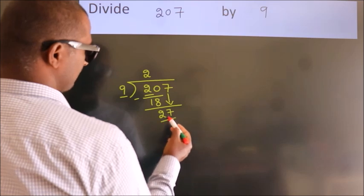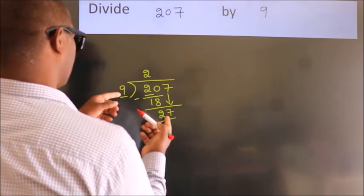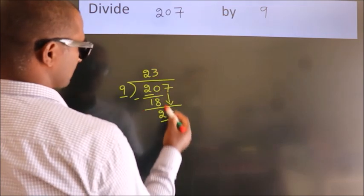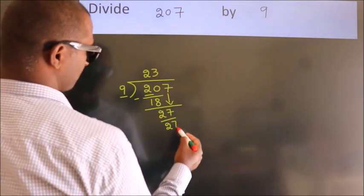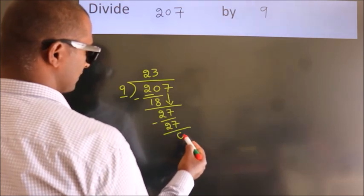So, 27. When do we get 27? In the 9 table, 9 times 3 equals 27. Now, we subtract. We get 0.